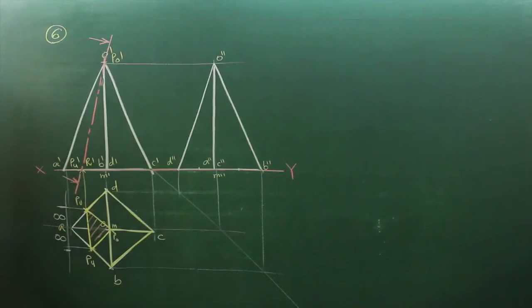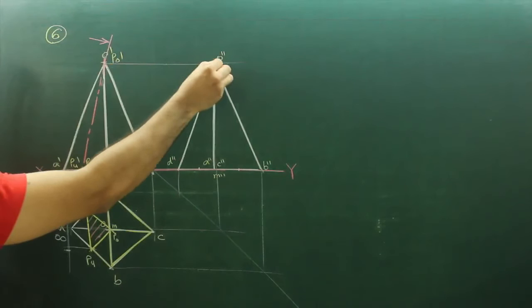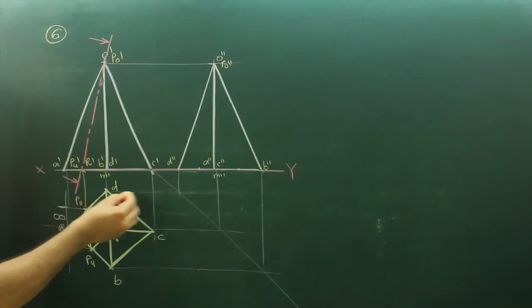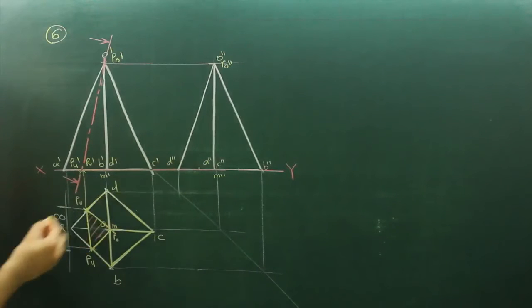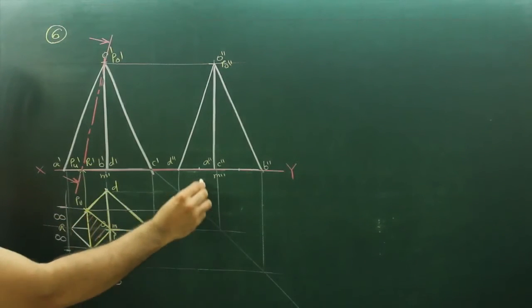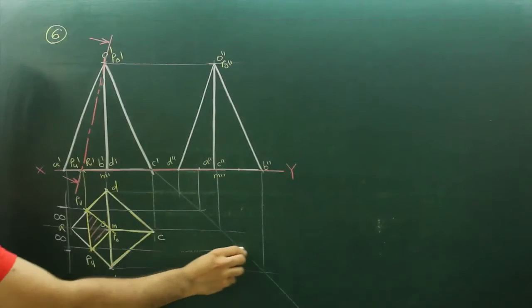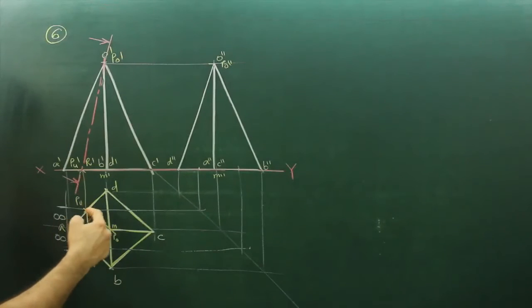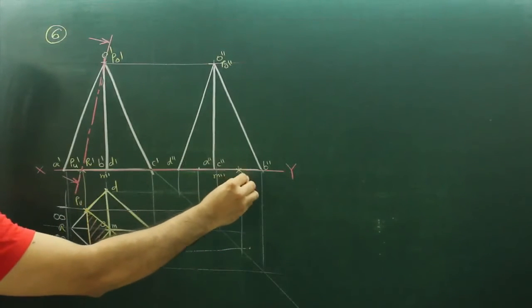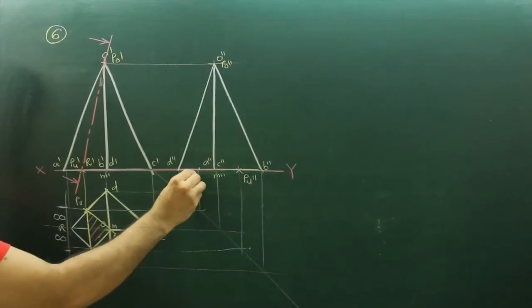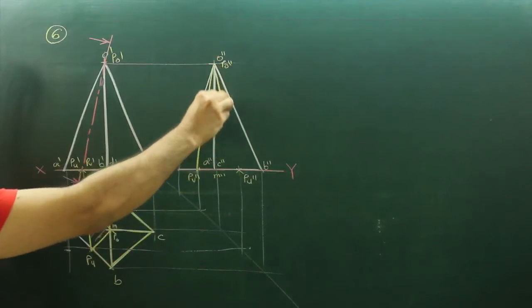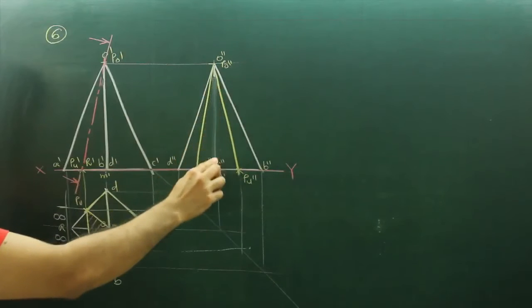Now for side view when you project we get only one point that is at base, this point PU double dash. But what about PU, PV that we can't project from front view. So it is point P double dash, PP double dash, join E. This line will go again.